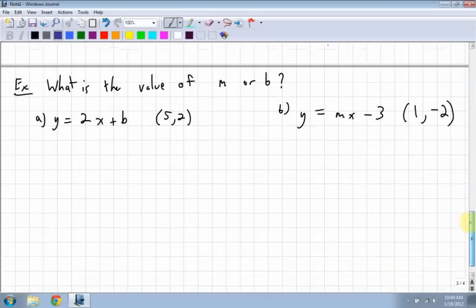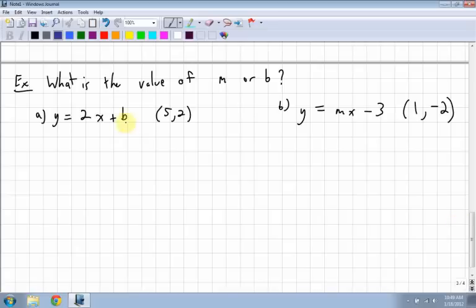Alright. Last question. What is the value of m or b? So they give you an equation. They leave b as b, or they leave m as m, and they give you a point. So you just have to substitute the point in for x and for y, and solve for the missing variable. So in this case, I plug the 2 into y. So I get 2 equals 2 bracket, my x becomes 5, plus b. Now I just solve for b. So the next step is to multiply the 2 and the 5, which is 10, plus b. Next step is to subtract the 10 from both sides. So 2 minus 10 is negative 8, and that's my b value. And I'm done.